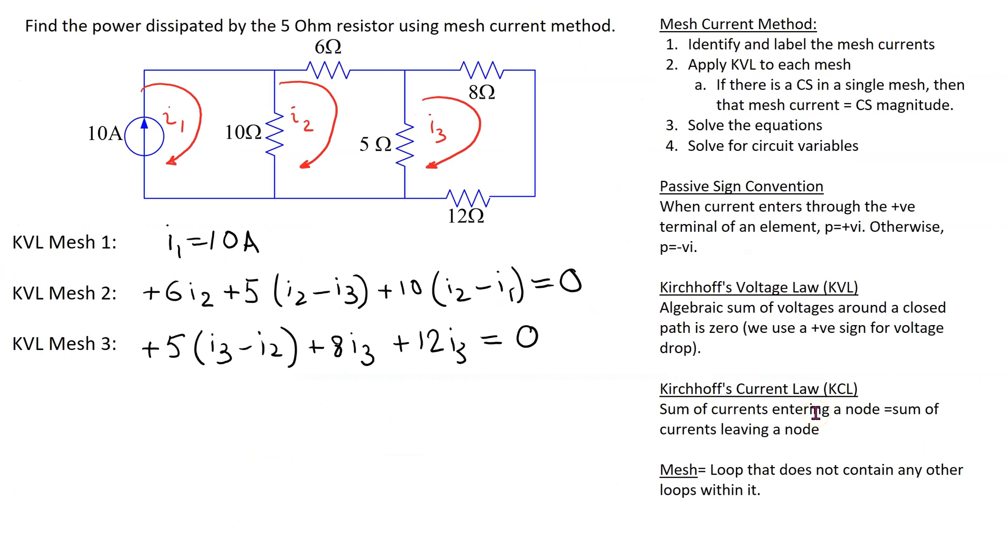Solving these equations, we can show that I2 is 5 amps and I3 is 1 amp.